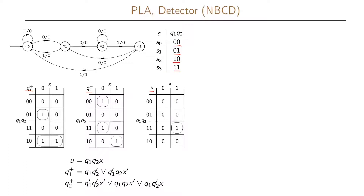When we write our functions: U equals Q1·Q2·X, which is one prime implicant. Q1+ equals Q1·Q2' plus Q1'·Q2·X', using two prime implicants. For Q2+, we have Q1'·Q2'·X', then Q1·Q2·X', and finally Q1·Q2'·X — using three prime implicants. So in total we have six prime implicants across all three functions.